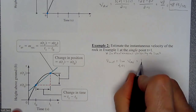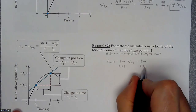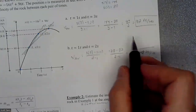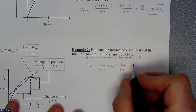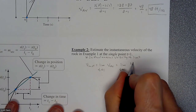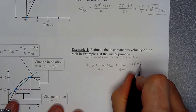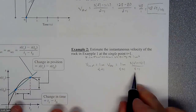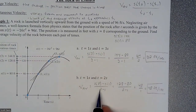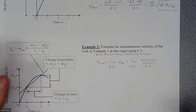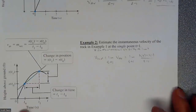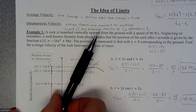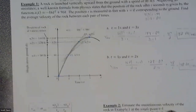So it's the limit as t approaches 1 of our average velocity formula, applied to this specific example. That gives us s(t) minus s(1) divided by t minus 1, where this value of t is going to get infinitely close to 1. We need to build out some values to see this in action.